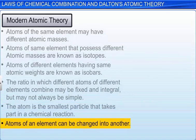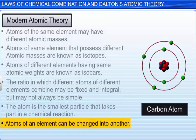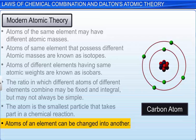In nuclear reactions, atoms of an element can be changed into another. For example, atoms of nitrogen can be changed to oxygen through bombardment with alpha rays.